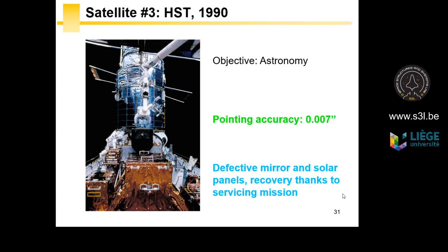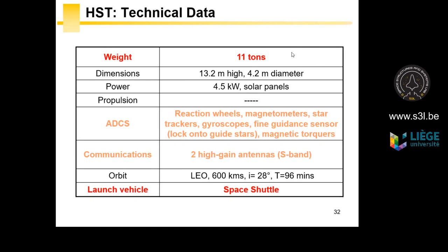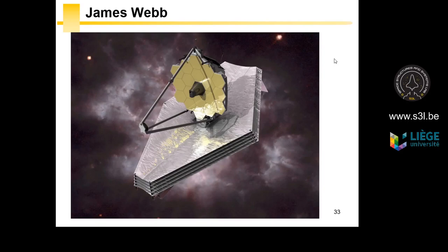In 2021 or 2022, the USA will launch, with a European rocket, the successor of this telescope — the James Webb Space Telescope. The technical challenge was to put 11 tons into orbit. The only solution at the time was the Space Shuttle with its cargo bay. The weight is heavy and the size is large. You need more than 4 kilowatts to use the telescope, and the ADCS complexity is enormous given the pointing accuracy requirement of less than one arc second. To communicate, you need to send pictures to the ground, requiring a high communication rate and large antennas.